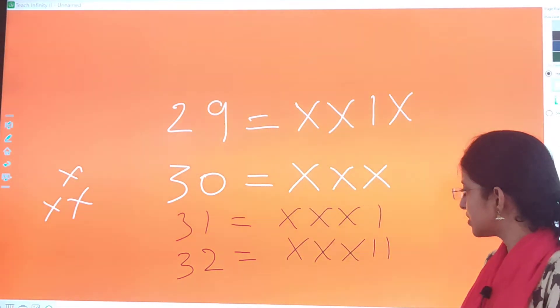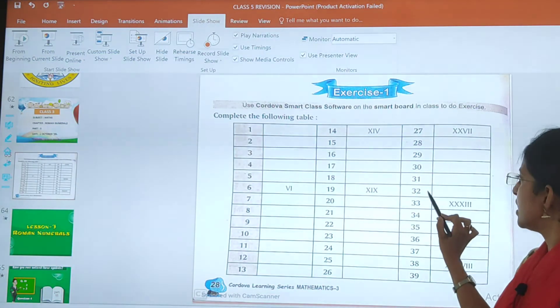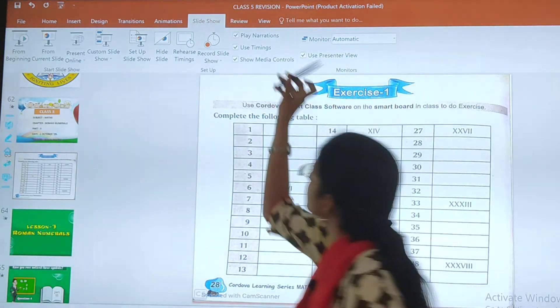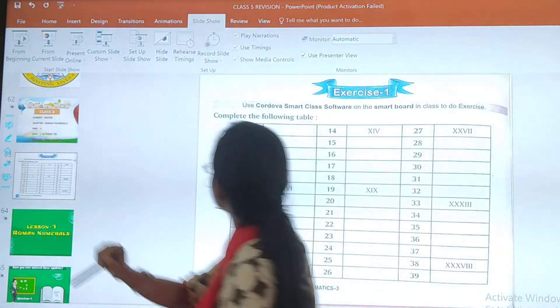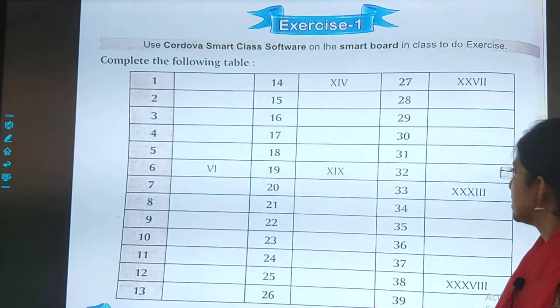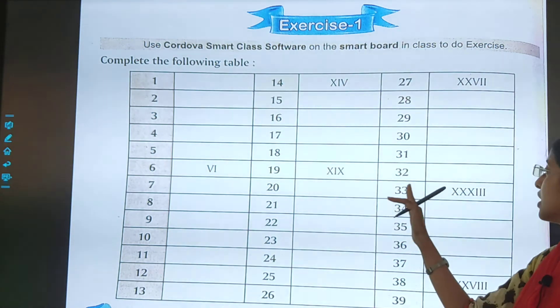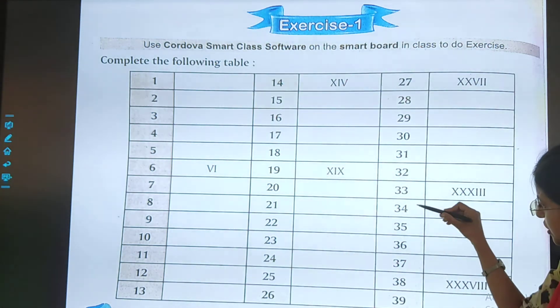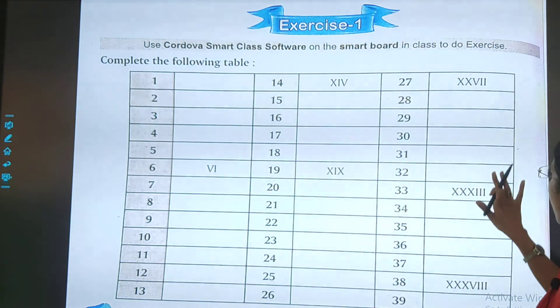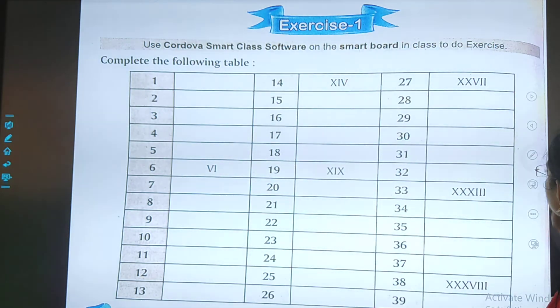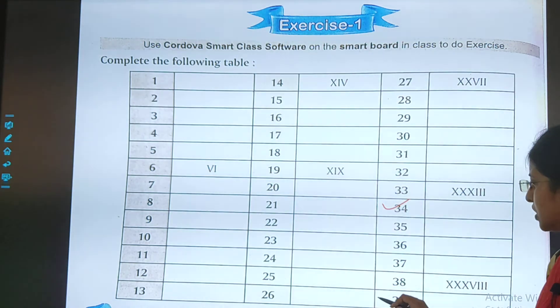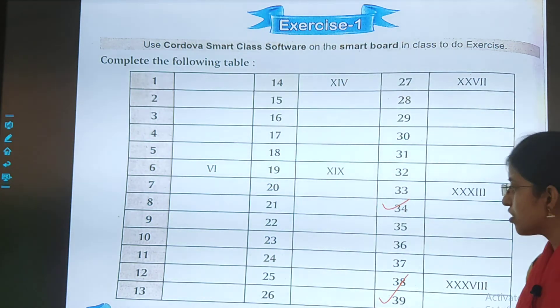Now children, I have done till here. Till 32 I have done for you. 33 is also done for you. You have to do till 39. This is your homework. From 34 to 39. This is your homework.